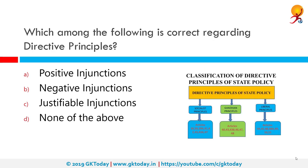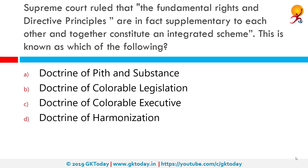Which among the following is correct regarding directive principles? The correct answer is positive injunctions. A positive injunction requires a positive act on the part of the defendant. The directive principles of state policies are rights defined in Part 3 of the constitution, applied irrespective of race, place of birth, religion, caste, creed or gender. They are enforceable by the court subject to specific restrictions, and are guidelines for framing law by the government.